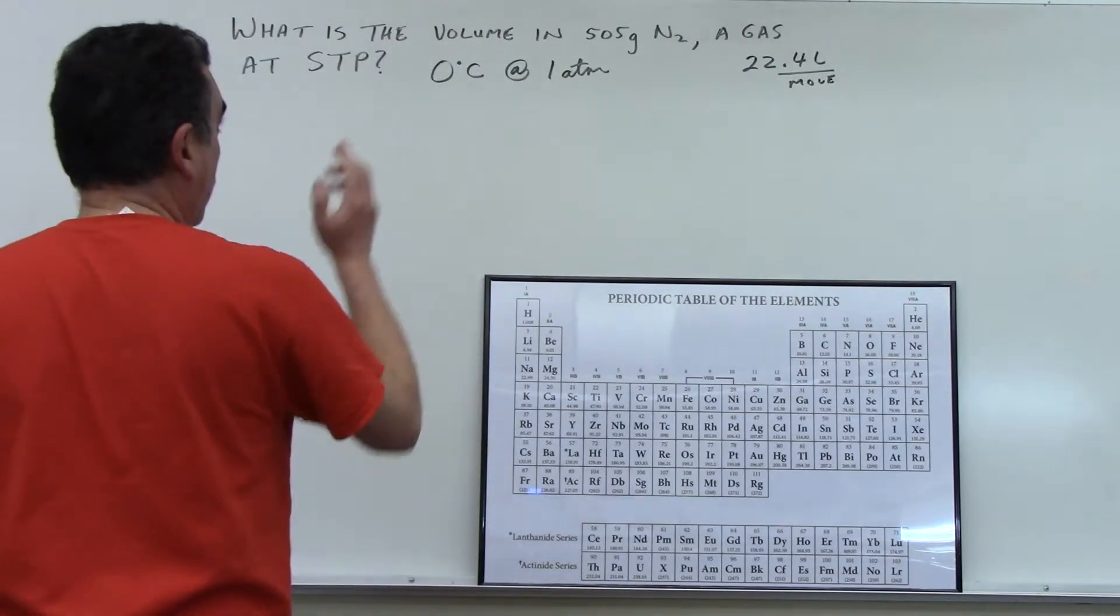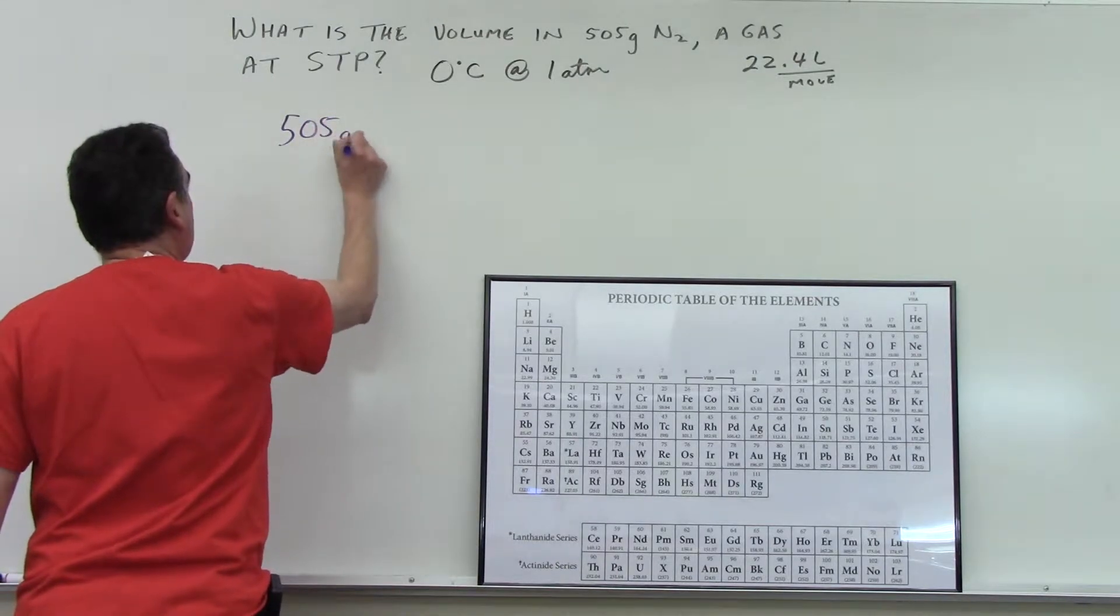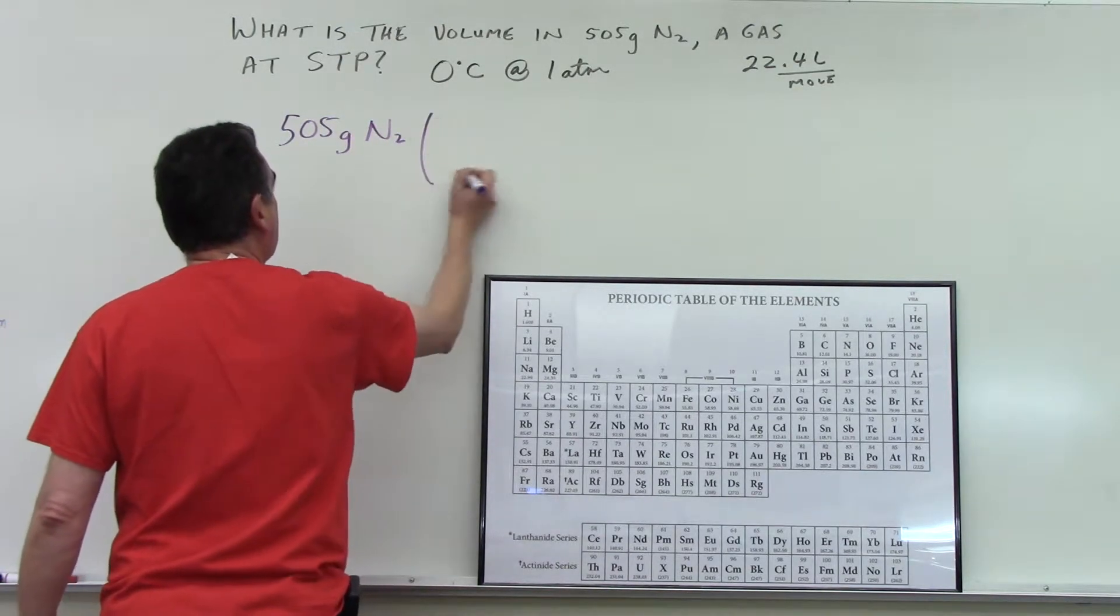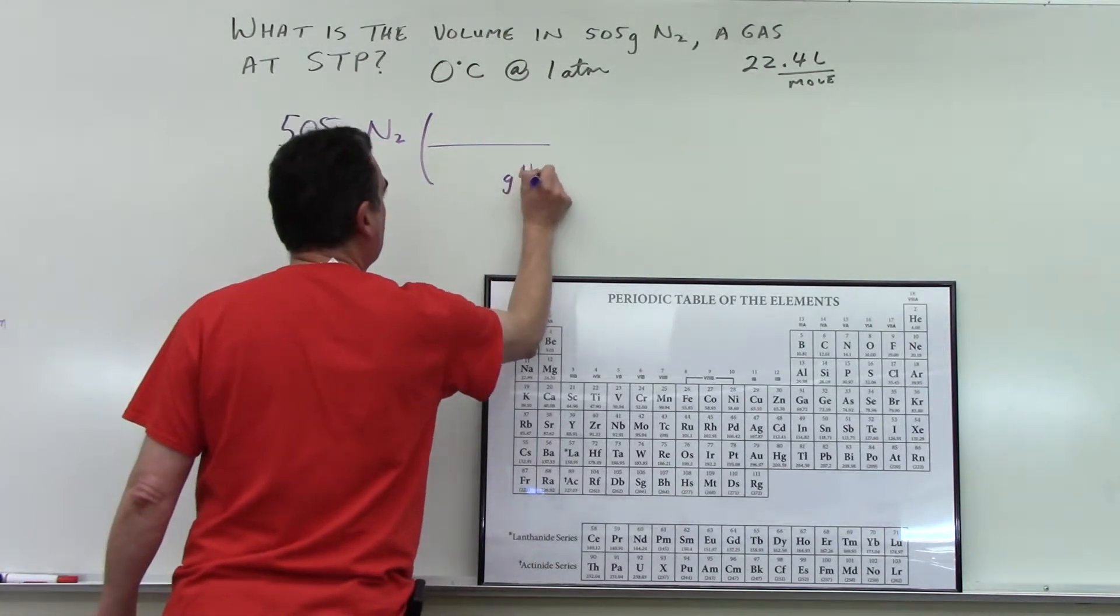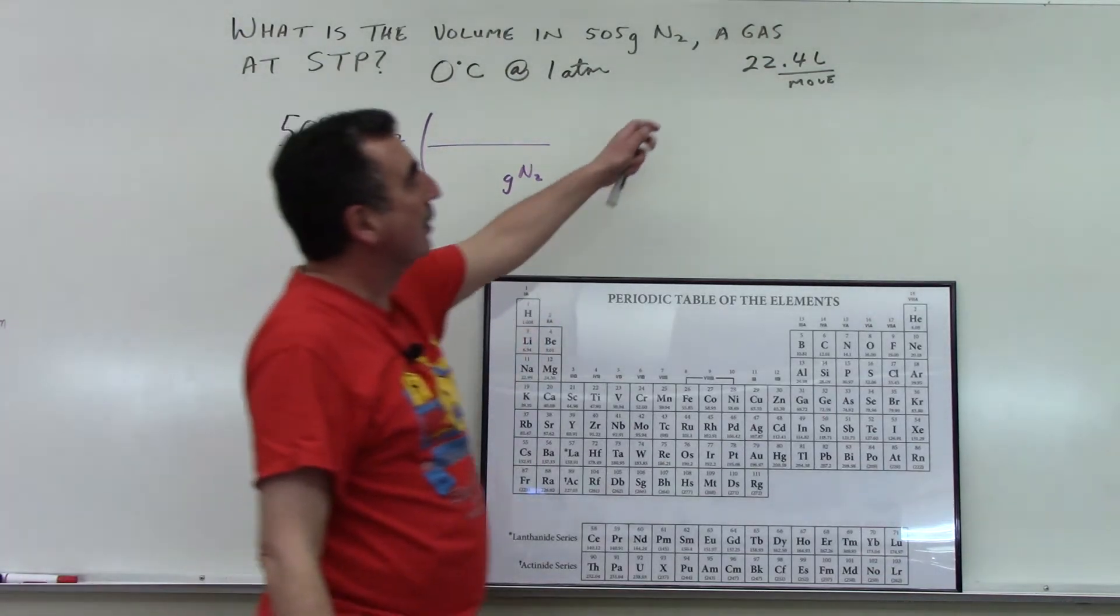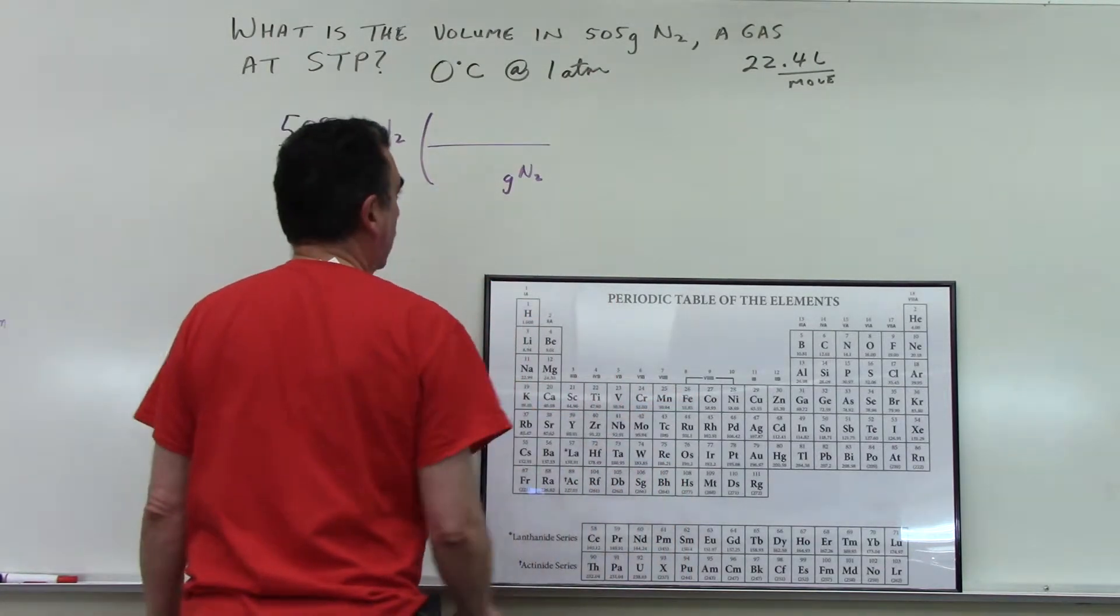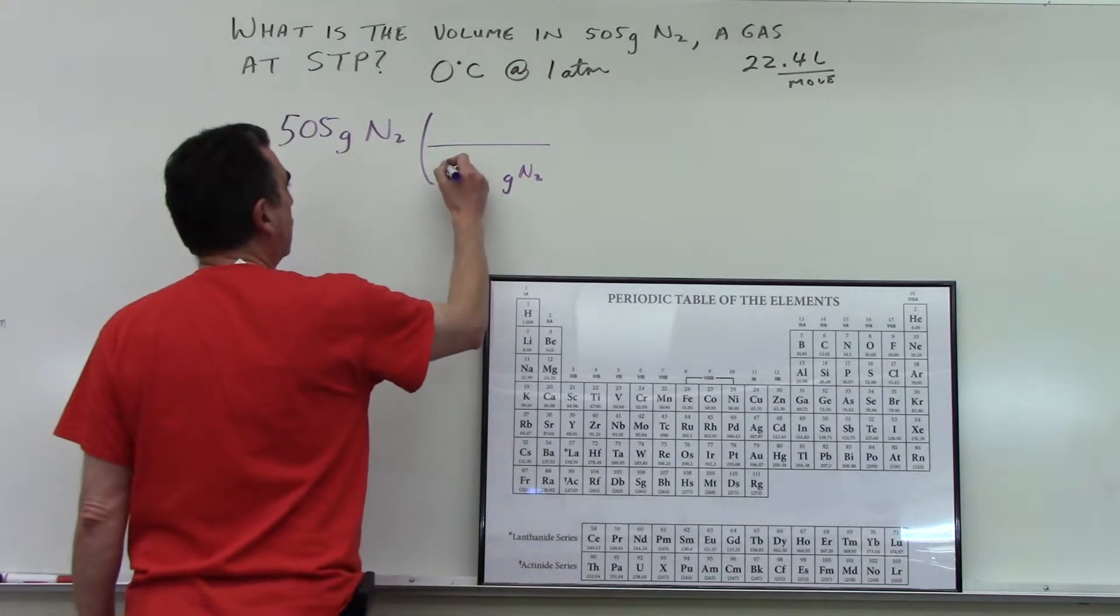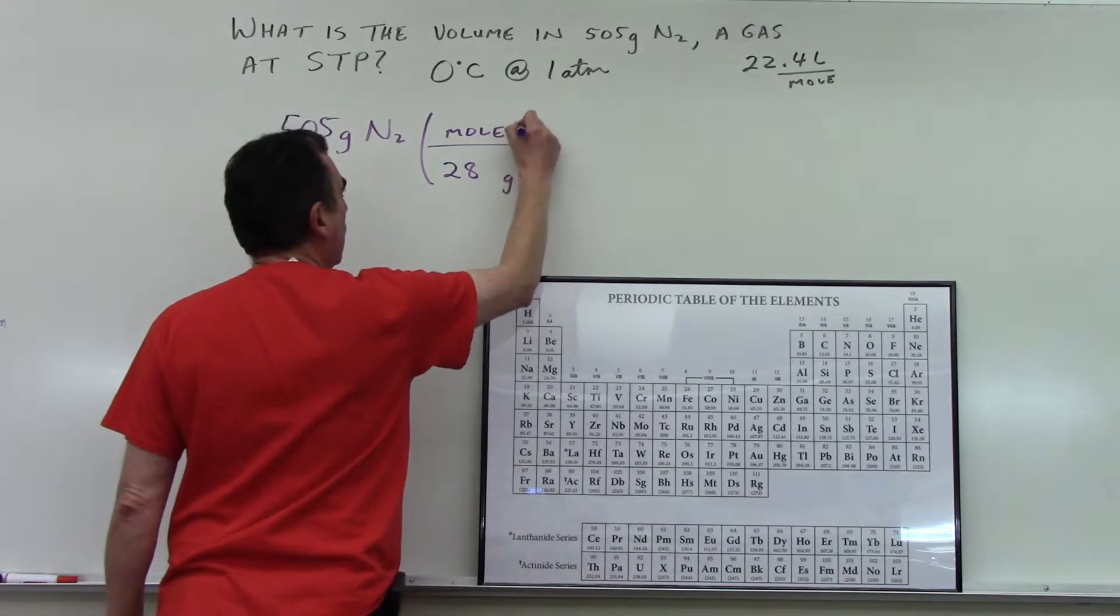So let's start with what's given: 505 grams N2. Fraction bar—whatever units on top, put on the bottom—grams N2. So we're going to need to convert to moles because STP conditions have liters per mole, and that will give us our volume. Periodic table: nitrogen is 14, so 2 times 14, 28 grams per mole N2.